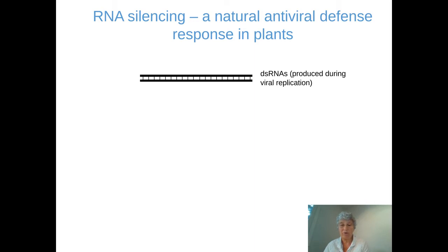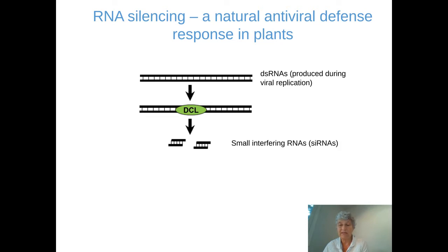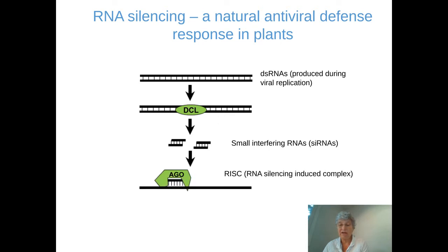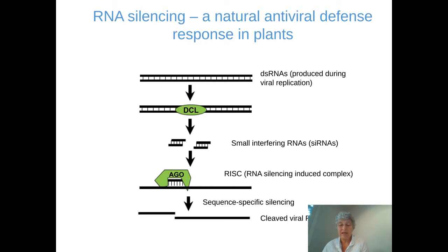I'm going to describe RNA silencing in a bit more detail because it's one of the main defense responses of the plant. It is initiated by the production of double-strand RNAs, which are normally not found in plants and are therefore recognized as foreign objects. They are produced during the steps of viral replication and are recognized by Dicer-like enzymes, which cleave this RNA to produce small interfering RNAs. Those small interfering RNAs, specific for the virus, are incorporated into an RNA-silencing-induced complex — also called RISC — which contains one Argonaute protein, abbreviated AGO. This results in sequence-specific silencing, most of the time causing cleavage of the viral RNA at the site corresponding to the binding of the small interfering RNAs.